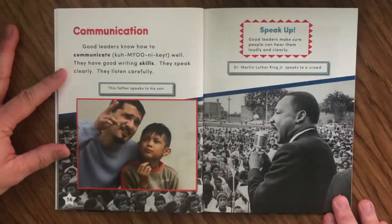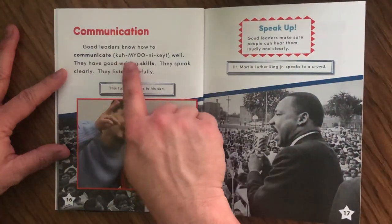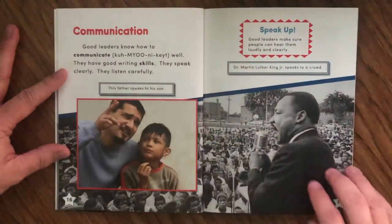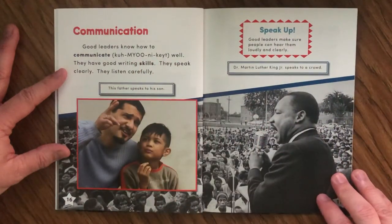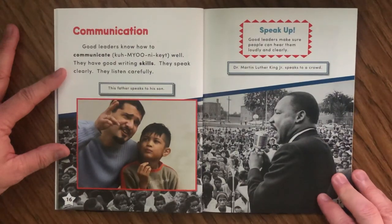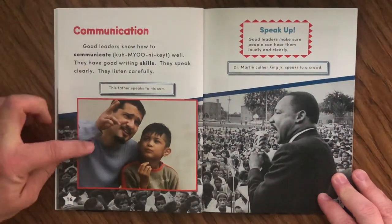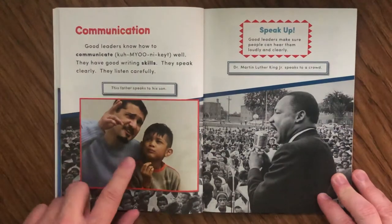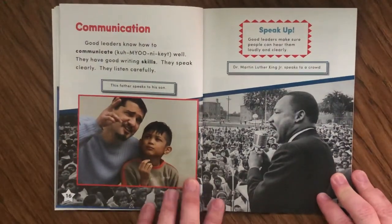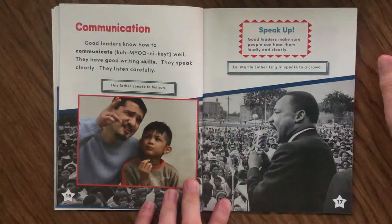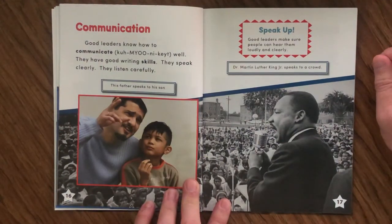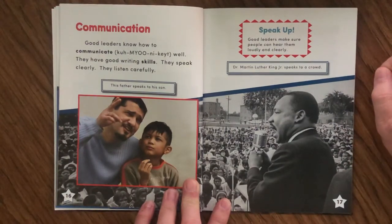Communication. Good leaders know how to communicate well. They have good writing skills, they speak clearly, and they listen carefully. This father speaks to his son — he's explaining something, and you can tell the son's thinking. Good leaders make sure people can hear them loudly and clearly. Dr. Martin Luther King Jr. speaks to a crowd.